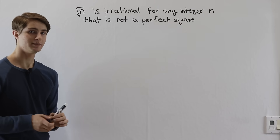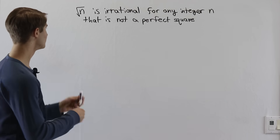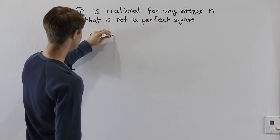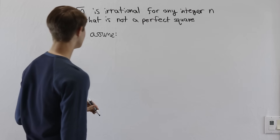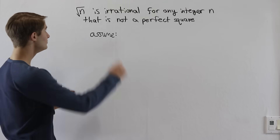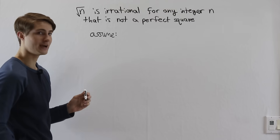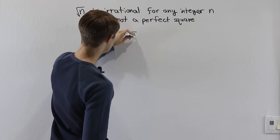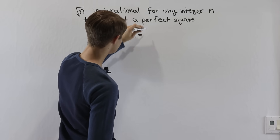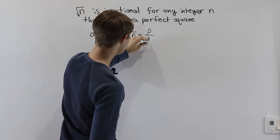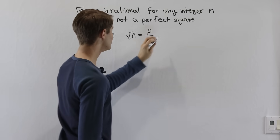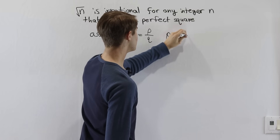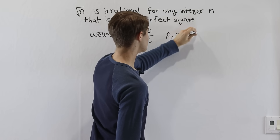We are going to do that by contradiction. To start out, we'll assume the opposite. So we will assume that the square root of n is rational. If that's true, we know that the square root of n can be written as p over q, where p and q are integers.